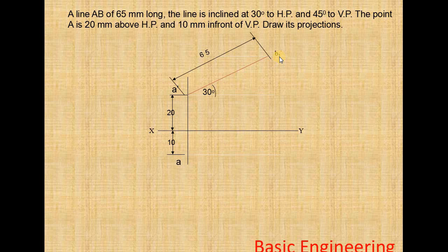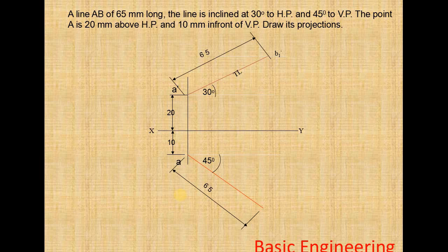Similarly, at A, draw a line at 45 degrees to VP. The line is inclined at 45 degrees to VP, so at A draw a 65mm line at an angle of 45 degrees. Name the end point as B2. Now draw a locus line at B2 — draw a horizontal line through B2.